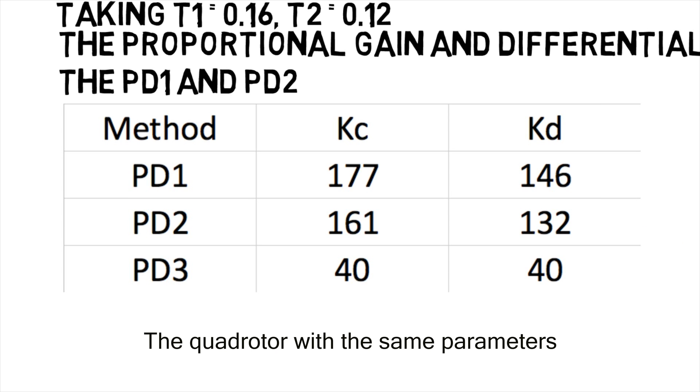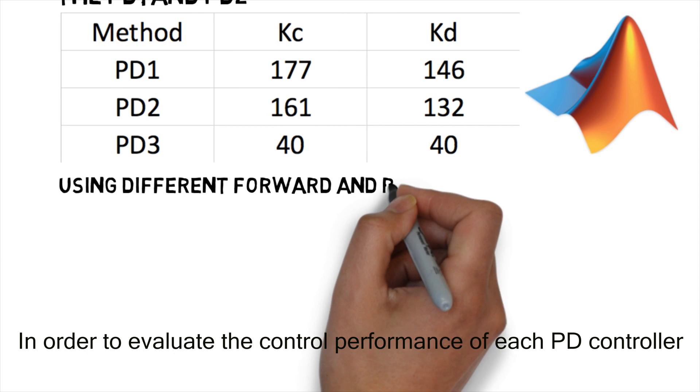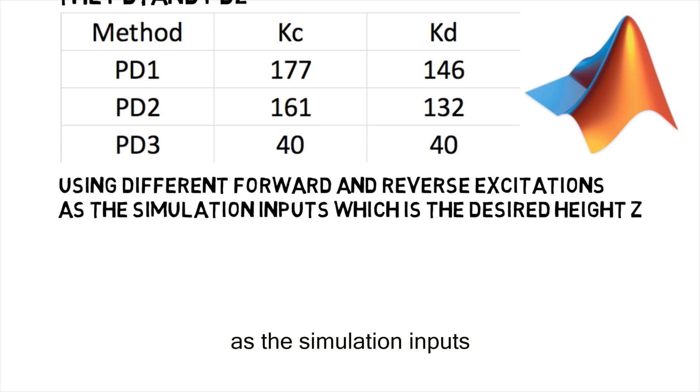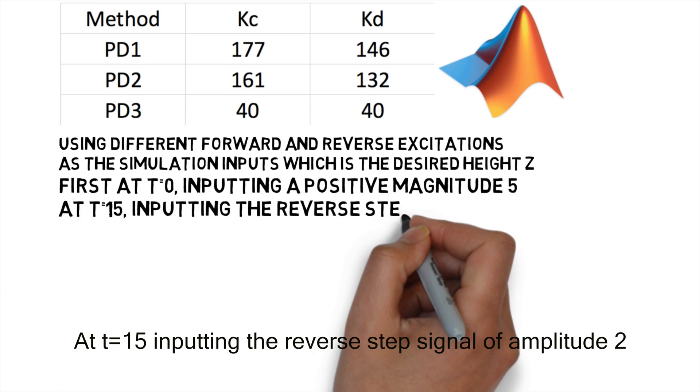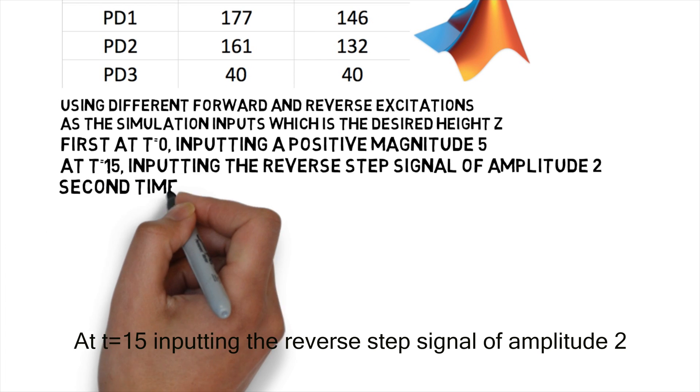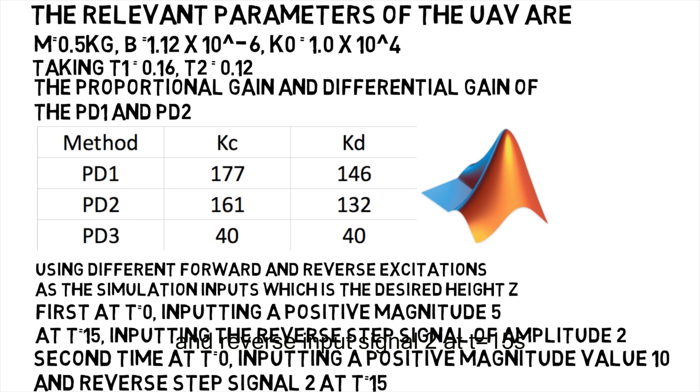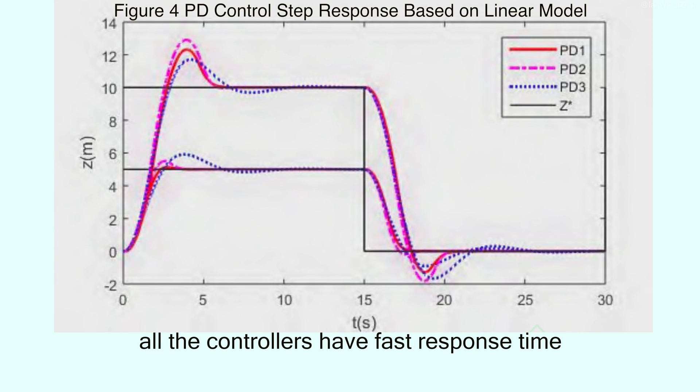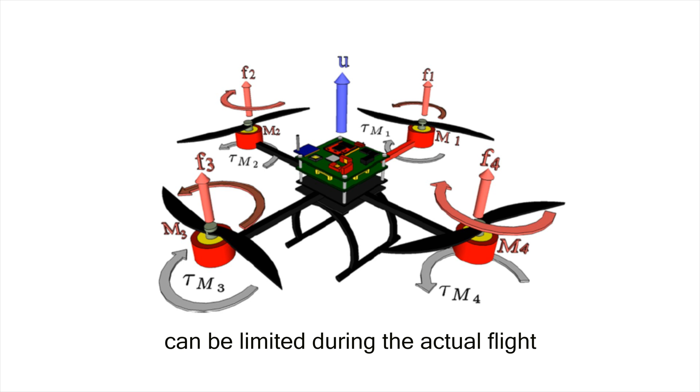The quadrotor with the same parameters is controlled with different PD controllers simulated in MATLAB. In order to evaluate the control performance of each PD controller, using different forward and reverse excitations as the simulation input, which is the desired height. First at t=0 inputting a positive magnitude 5, at t=15 inputting the reverse step signal of amplitude 2. Second time at t=0 inputting a positive magnitude value 10 and reverse input signal 2 at t=15 seconds. From the simulation results in figures 4 and 5, all the controllers have fast response time. When the set hovering height is low, the robustness of PD1 and PD2 is slightly better. However, when the hovering height is higher, the overshoot of both increases or even exceeds the amplitude of PD3.